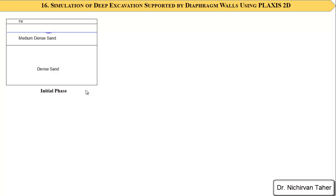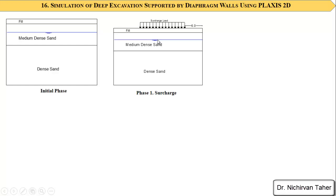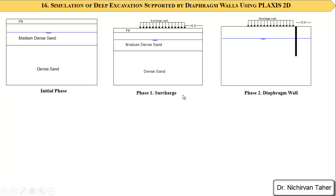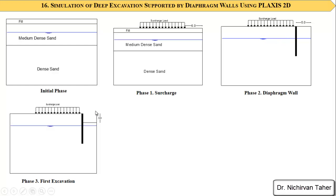In Plaxis we will simulate the following steps. First, we assume an initial phase with three soil layers only, and in this initial phase the geostatic stresses are calculated. After that we apply a surcharge load coming from the existing structure. Then we will construct a diaphragm wall. The width of the excavation will be 5 meters and we will use plane strain in Plaxis 2D. After construction of the diaphragm wall we will perform the first excavation.